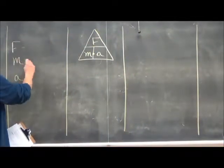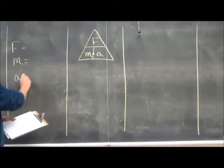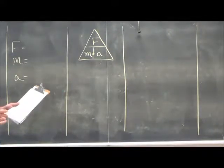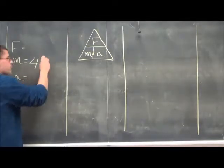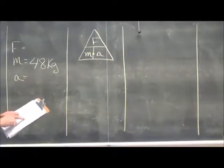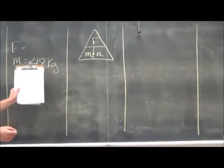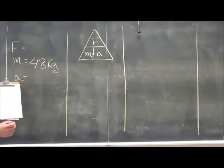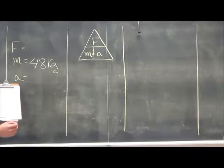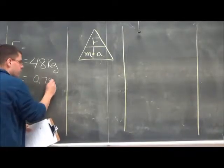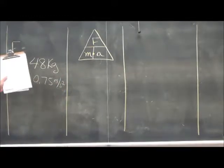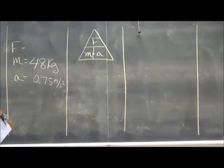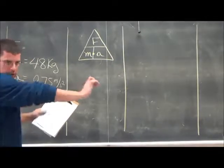Let's take a look at number one. A little boy pushes a wagon with his dog on it. The mass of the dog and wagon together is 48 kilograms, and kilogram is the unit for mass. The wagon accelerates, so there must be an unbalanced force. The acceleration is 0.75 meters per second squared. We're given mass, acceleration, and we need to determine how much force was applied. That push, that contact force, or applied force.